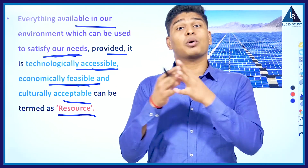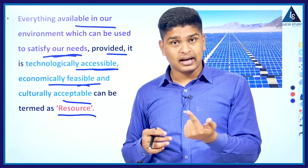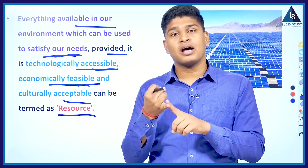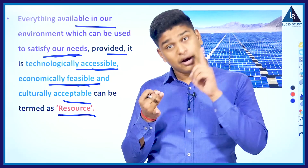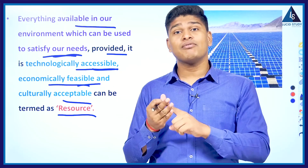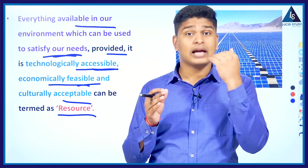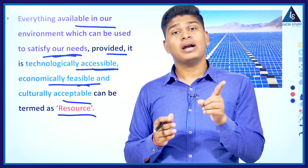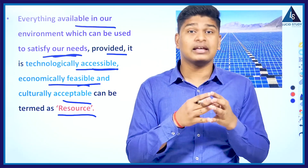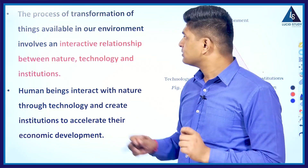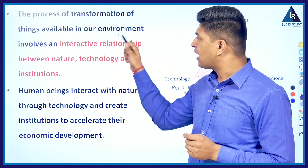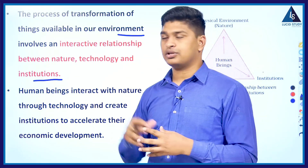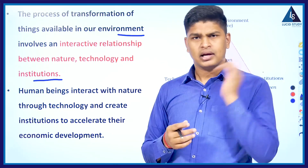Today we have e-bikes, e-cars, and e-buses — once upon a time that was not feasible, but today we have the technology to build them and it is also economically feasible, so people are buying them. People also don't have any cultural problems regarding buying an e-bike or e-car, so it became a resource. That's how, when all those scenarios are favorable, a thing or entity can be termed a resource. The process of transformation of things available in our environment involves an interactive relationship between nature, technology, and institutions.